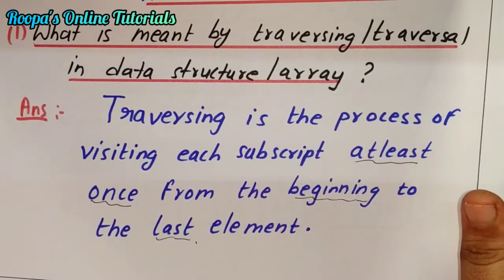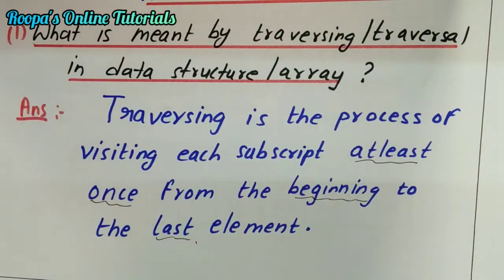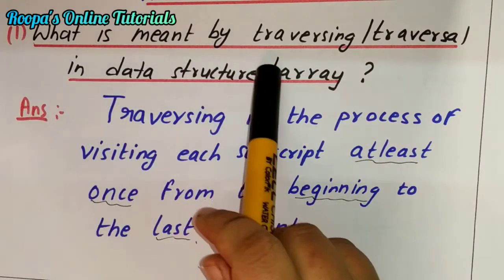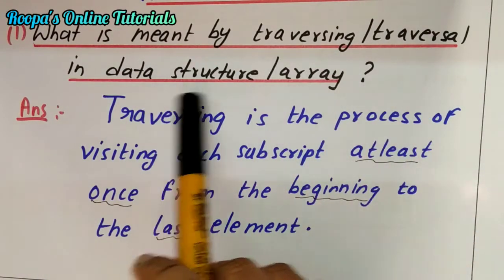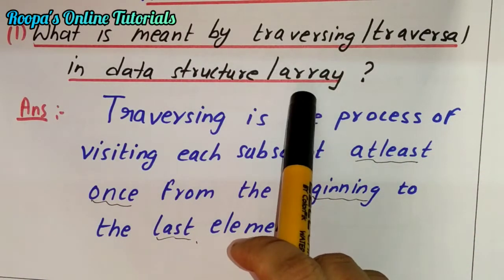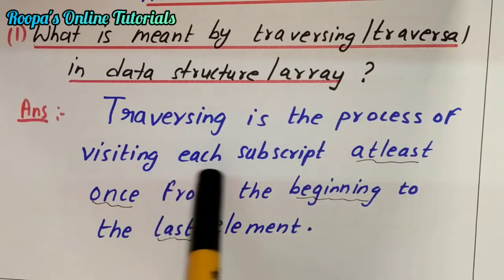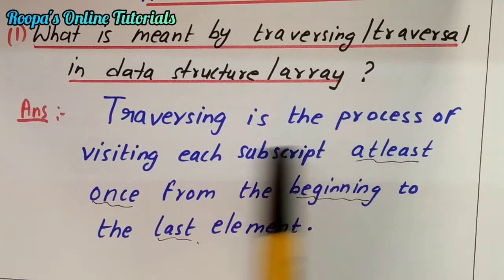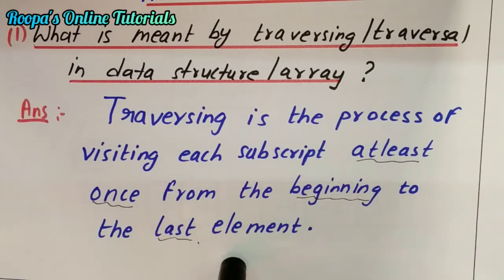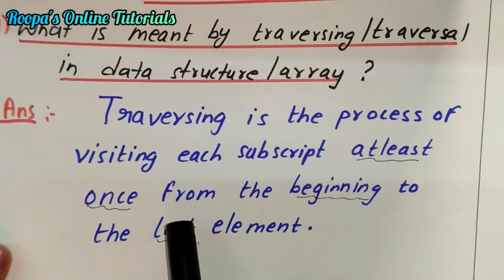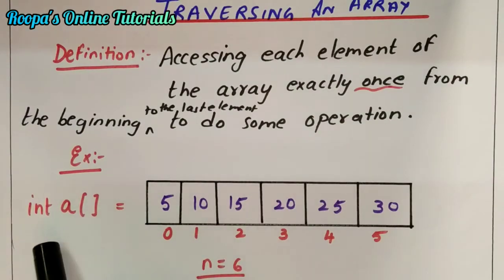First we will look at traversing. What is meant by traversing? In simple words, it means visiting each and every element of the array. For example, if you have to give your invitation card to your family — there is a wedding in your house — you will go and visit all your relatives. That is called traversing. So it is the process of visiting each element at least once, from the beginning to the last element.